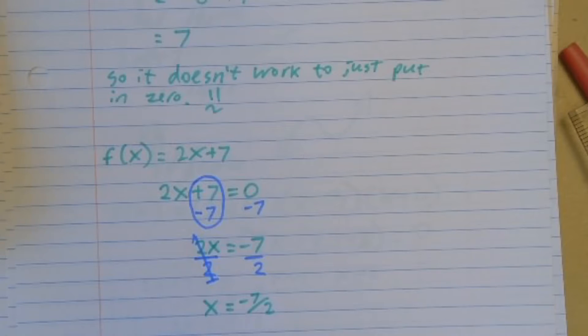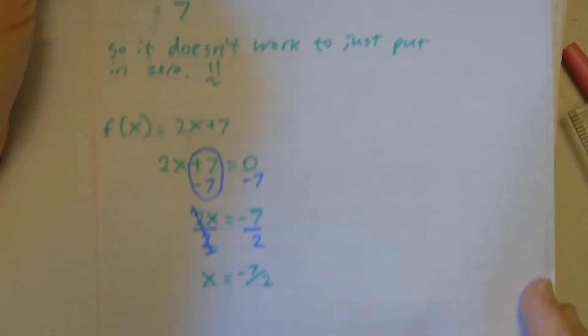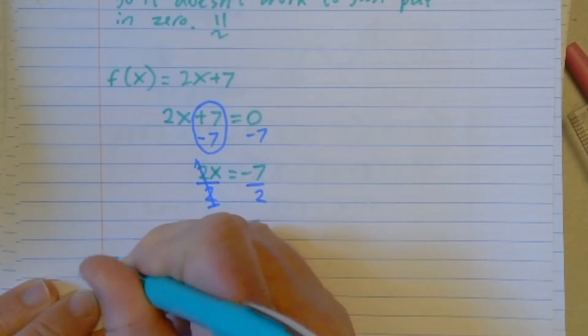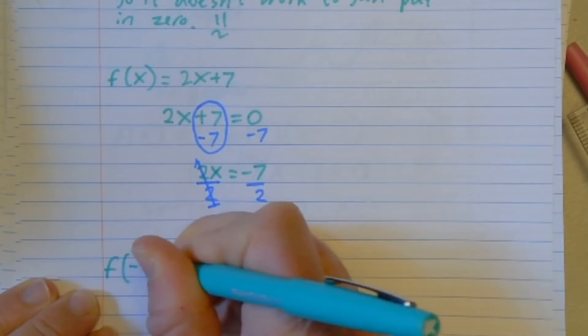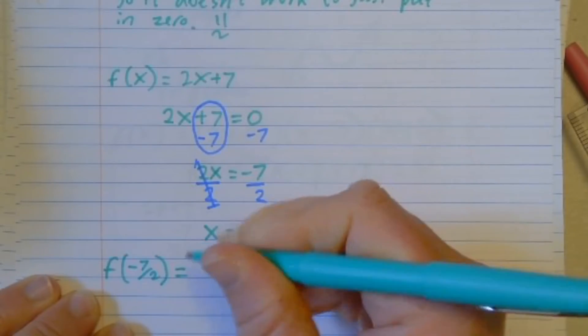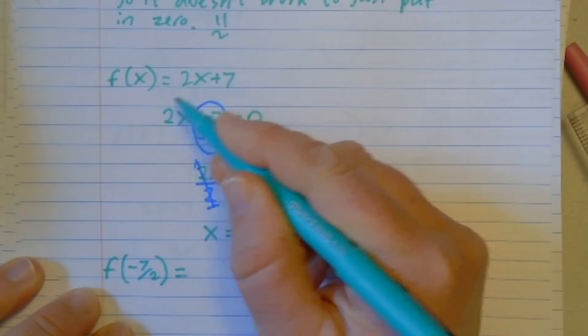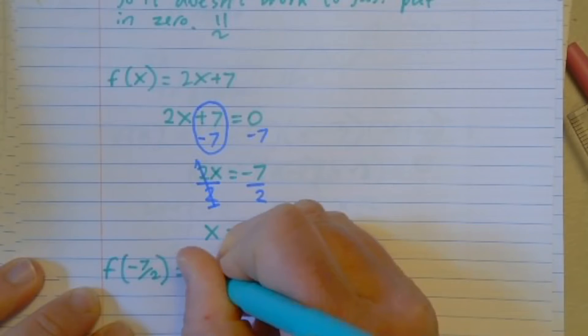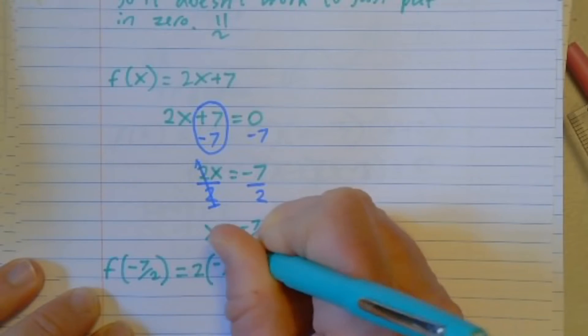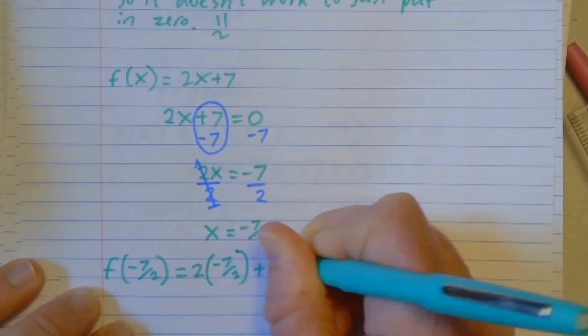And so this is the number that I can put into my function to get 0 out. And when I try that, remember my function is 2x plus 7. So I'd have 2 times negative 7 halves plus 7.